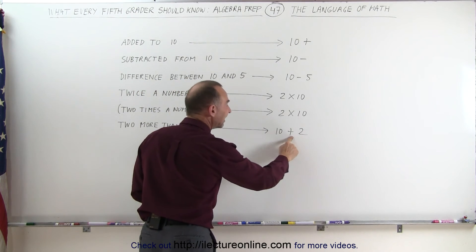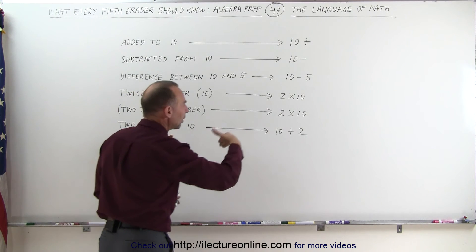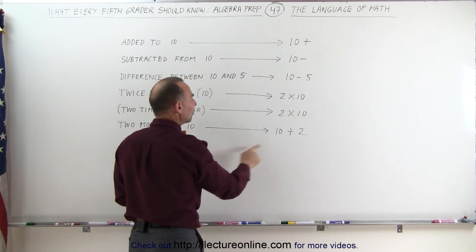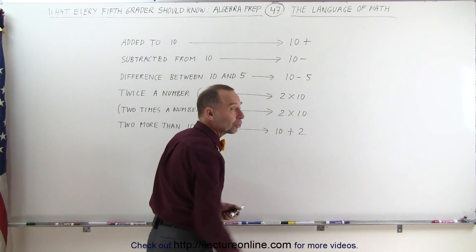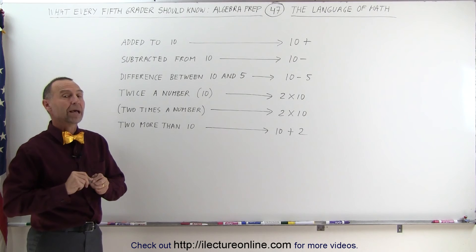This means two more than 10. So even though the language goes from left to right, the way we tend to write it is from right to left. Two more than 10 means 10 and then you add two more to that. And that's how we interpret the language of mathematics.